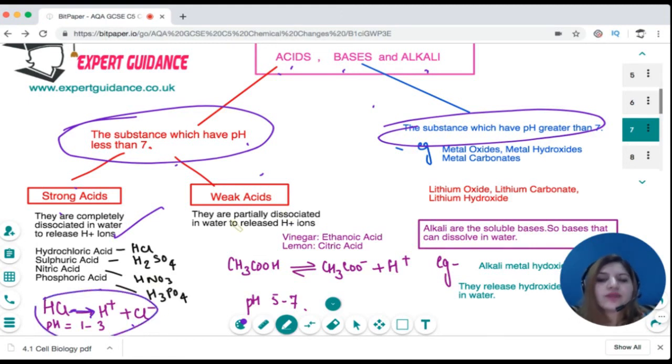Weak acids are partially dissociated to release H+ ions. For example, vinegar which is CH3COOH dissociates into CH3COO- plus H+. pH is in the range of 5 to 7.